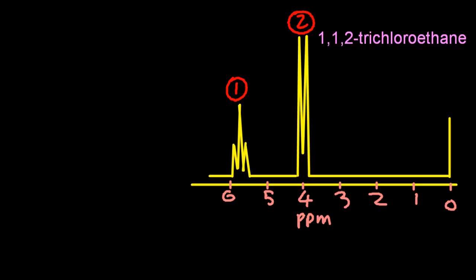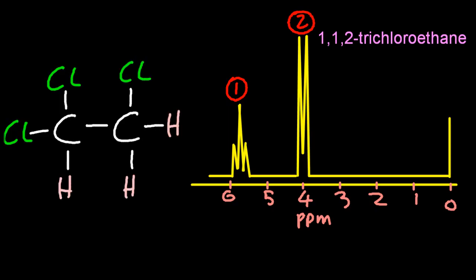1-1-2 trichloroethane is the next NMR spectrum. That's got two hydrogen environments. So how come there's three peaks? Don't forget the zero. It's TMS that's used to calibrate the machine. So the one is the hydrogen on the left, that one there.